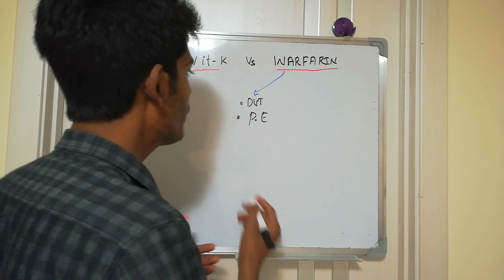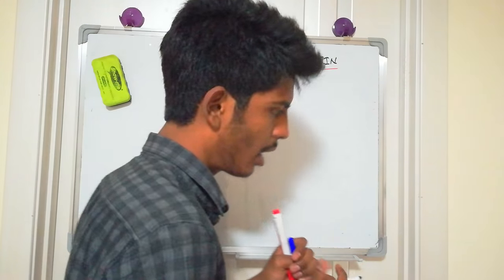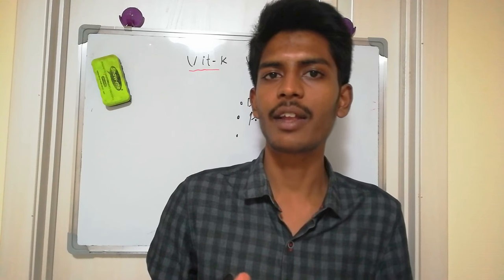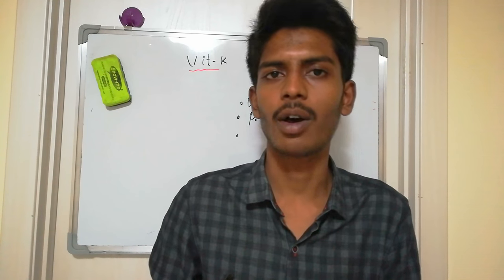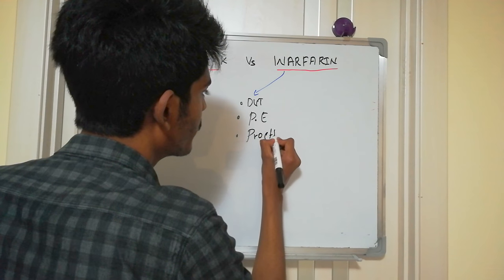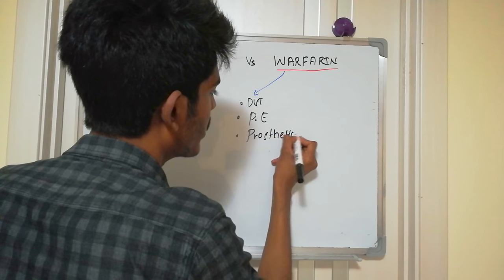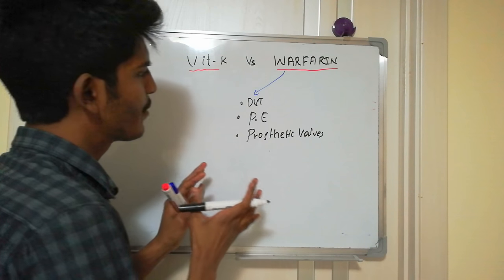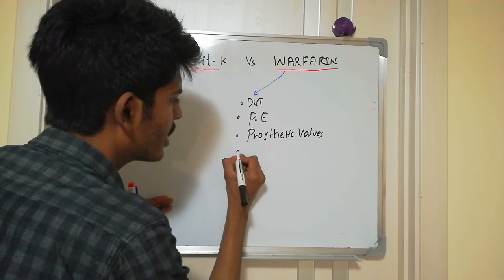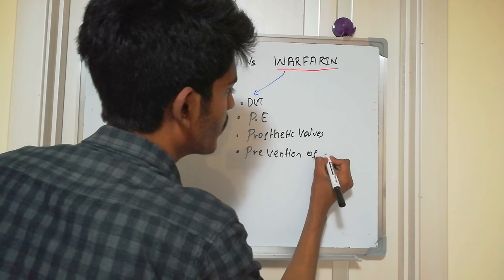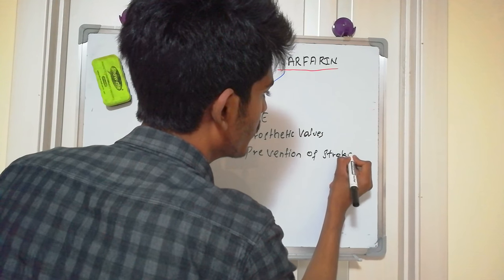Consider a patient who has had cardiac surgery with valve replacement — an artificial valve. Whenever there is an artificial prosthetic valve, there is a tendency for clot formation, so warfarin is used in patients with prosthetic valves. Warfarin can also be used in the prevention of strokes.